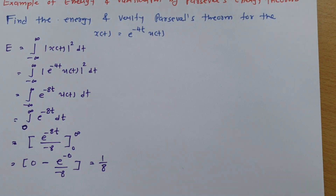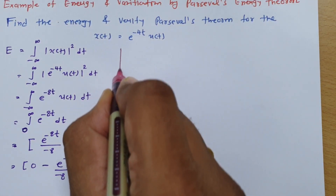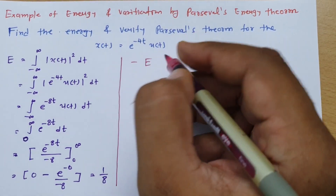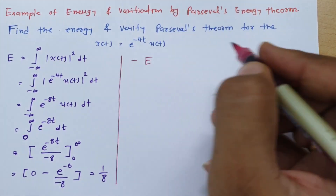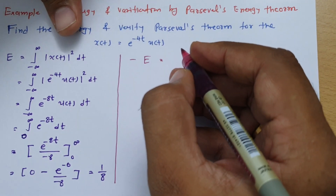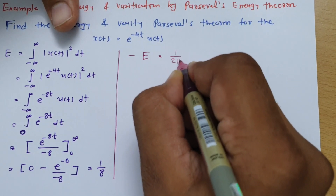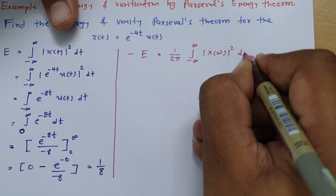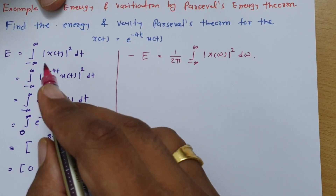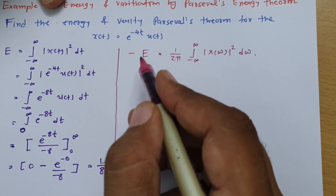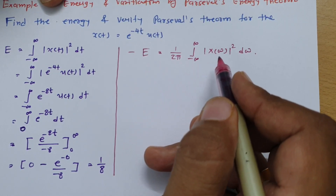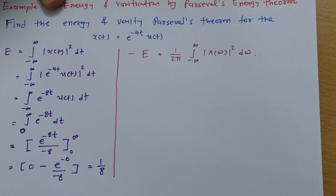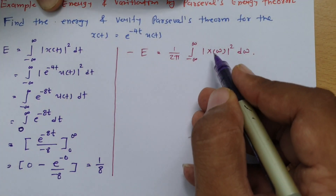Now we will verify this using Parseval's theorem. Parseval's theorem expresses energy based on the Fourier transform of x(t). The energy is calculated as (1/2π) × integration from minus infinite to infinite of |X(ω)|² dω. So while the basic formula uses time-domain integration, Parseval's theorem uses frequency-domain integration. Since x(t) = e^(-4t) u(t), we first need to calculate X(ω).